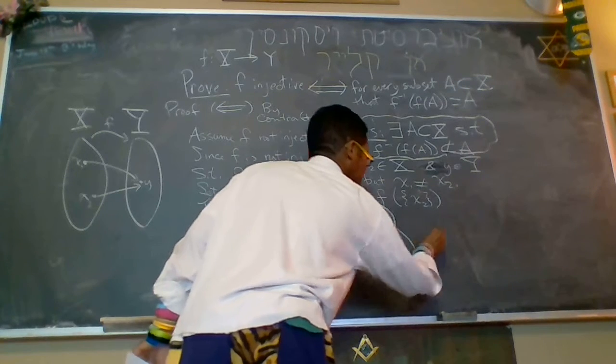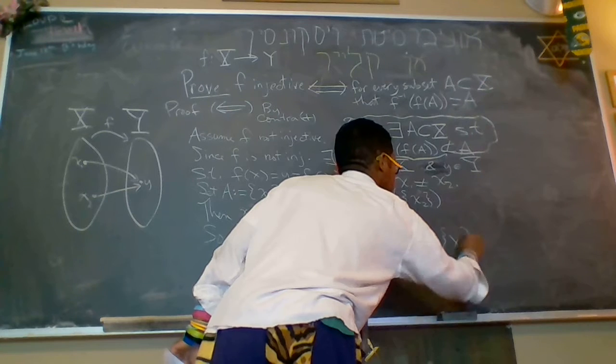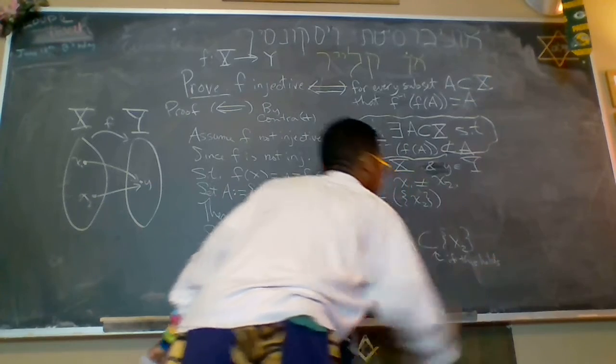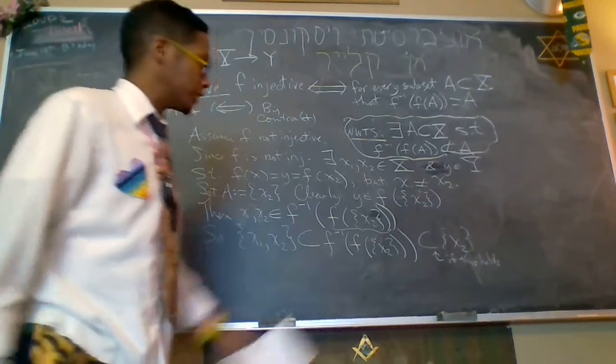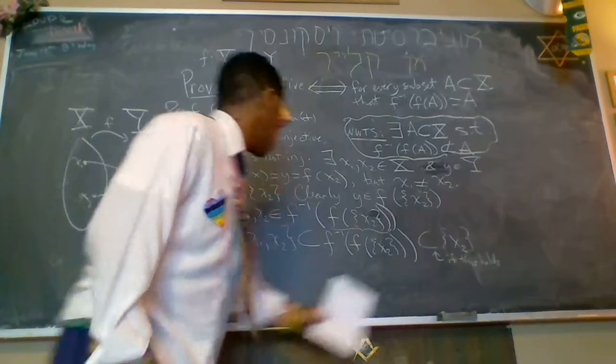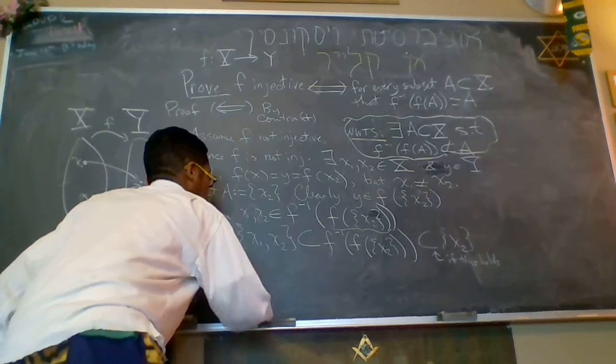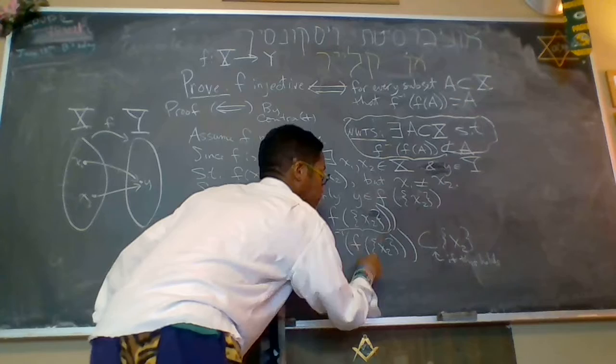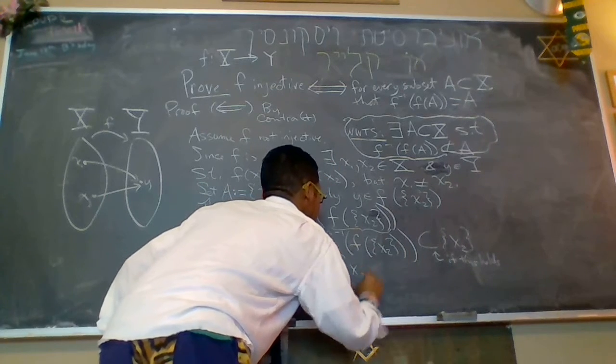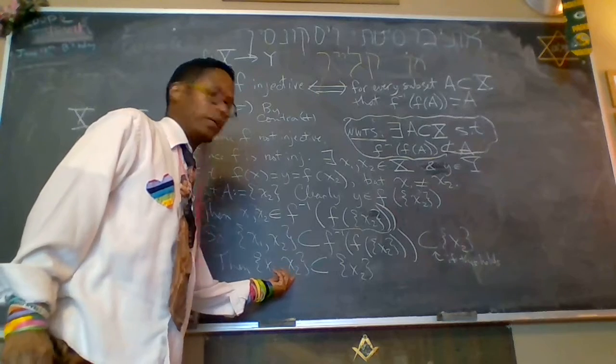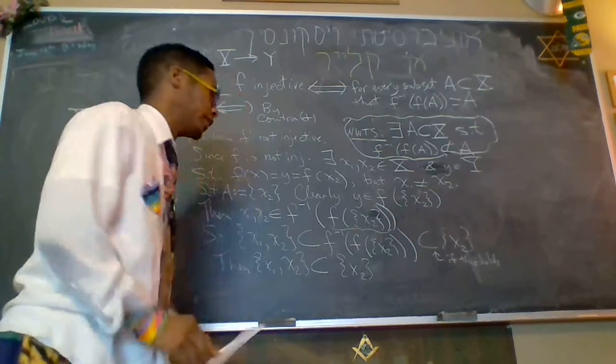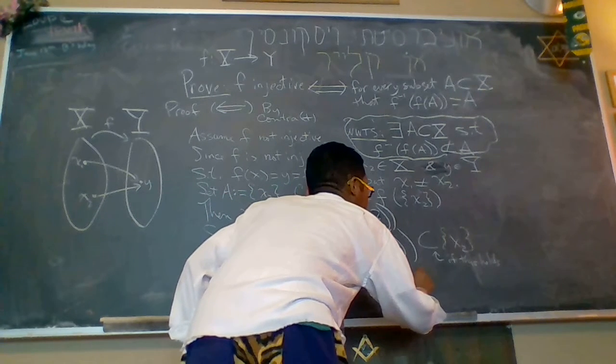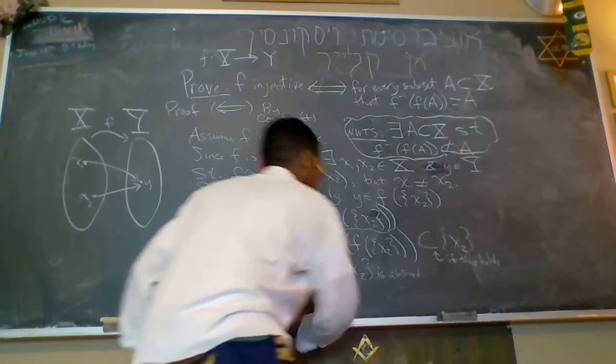So if we had the case where this was a subset of a, if this holds, if this holds, we're going to say, obviously, we want to show that this can't hold. If this holds, then I have the set containing x1, x2 is a subset of this, which is a subset of this, and that's absurd. The set x1, x2 cannot be a subset of a set that only contains x2. Let's just say, is absurd. Let's just say, cannot happen.